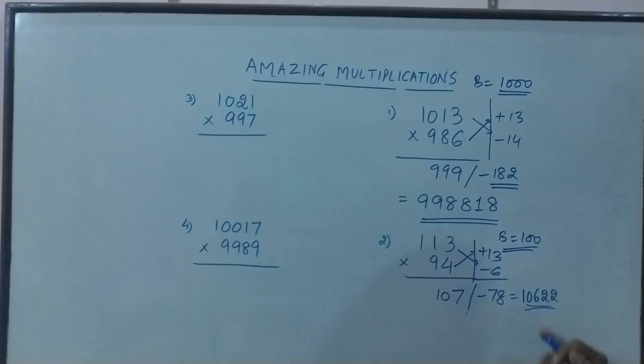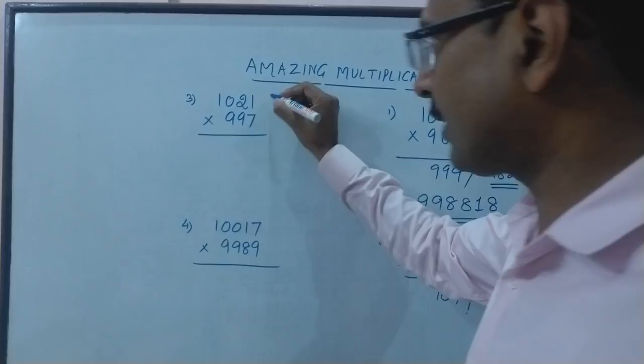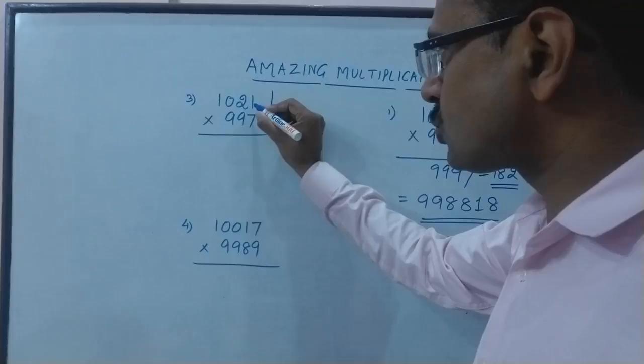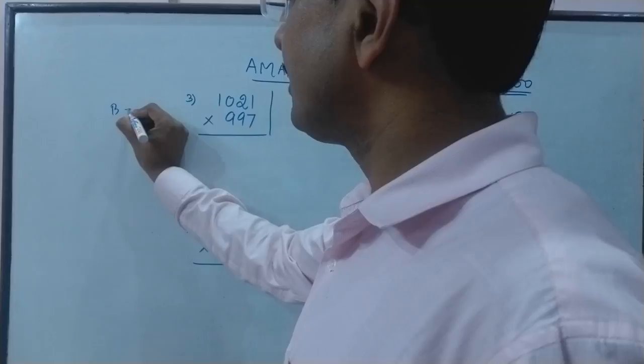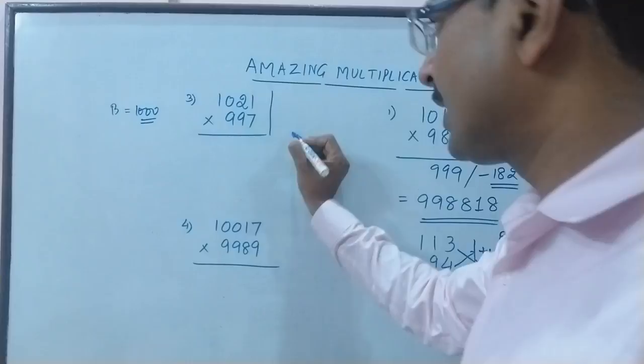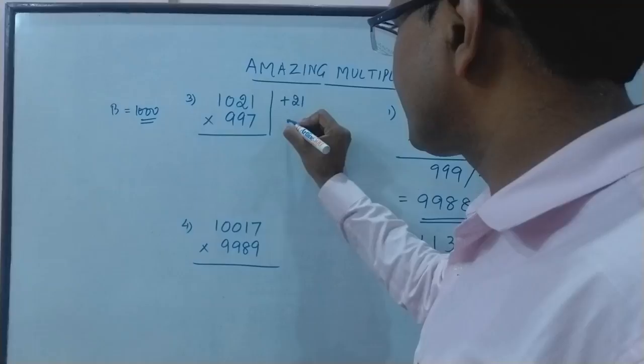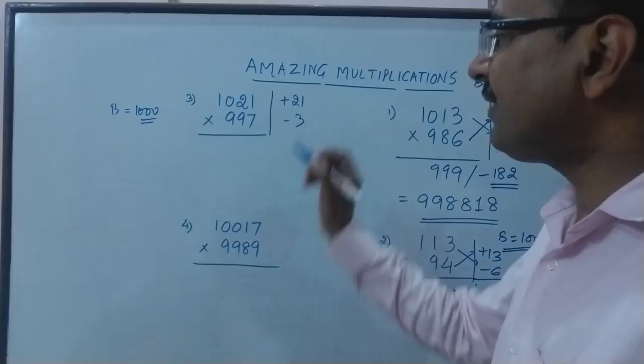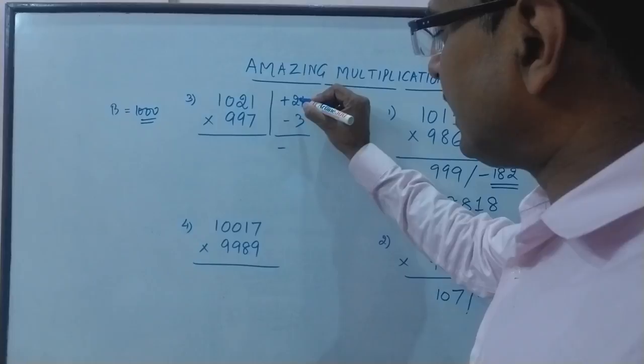Let's see 1021 and 997, another very easy question. This number is very close to 1000 and again this is also very close to 1000 so the base quantity here is 1000 which contains three zeros so I need three digits on the right hand side. This is 21 more than 1000 and this is just 3 less than 1000. If I multiply these two numbers I'm going to get 21 into 3 which is 63.